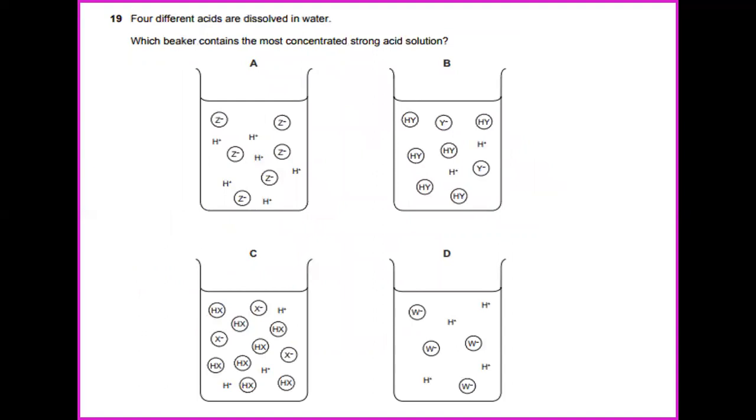Four different acids are dissolved in water. Which beaker contains the most concentrated strong acid solution? If you can see that in this category A, it consists of about six zinc and also six hydrogen, which is contributed to the most concentrated strong acid solution.